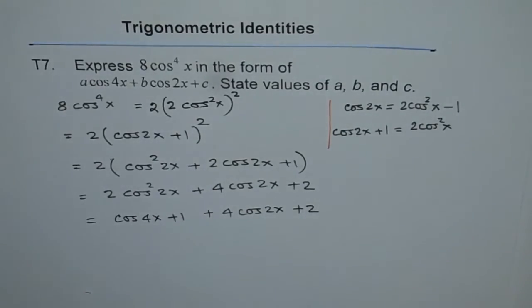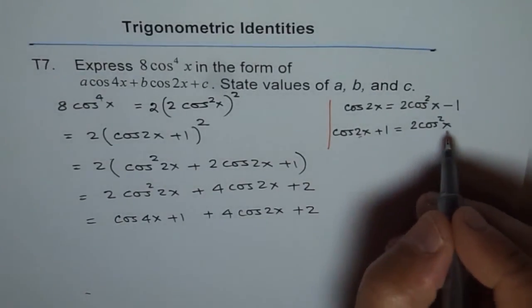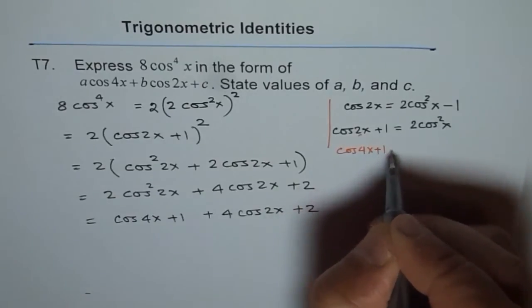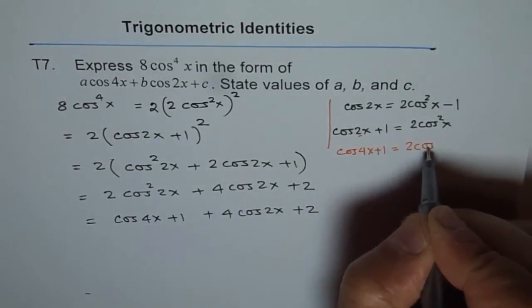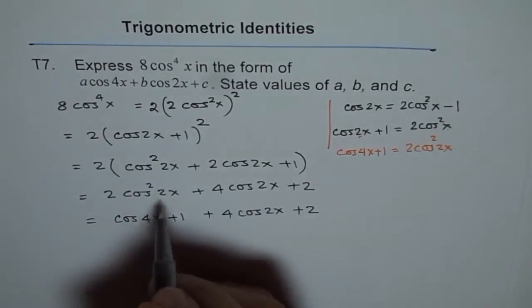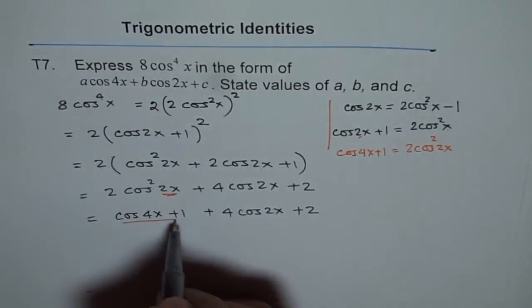So how did we do that? We simply replaced x with 2x. So this becomes cos of 4x. So this becomes cos of 4x plus 1 equals to 2 cos square of 2x. Replacing x with 2x and that's what we got here.